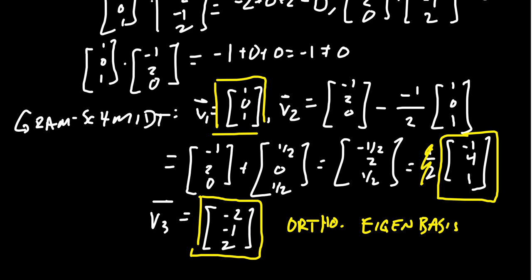So if you want an orthogonal basis, you just do the Gram-Schmidt process to each individual eigenspace. Because different eigenspaces will already be in the orthogonal complements of each other.